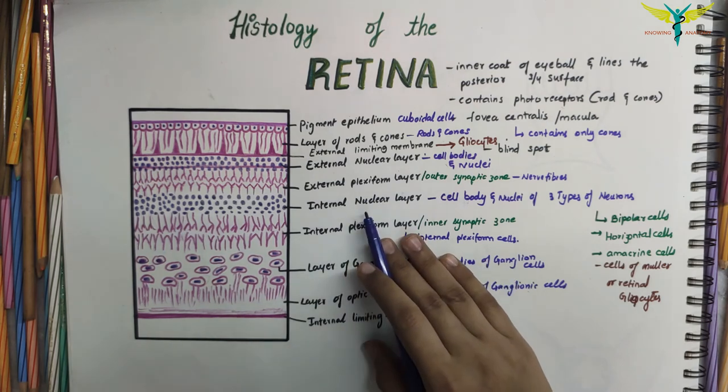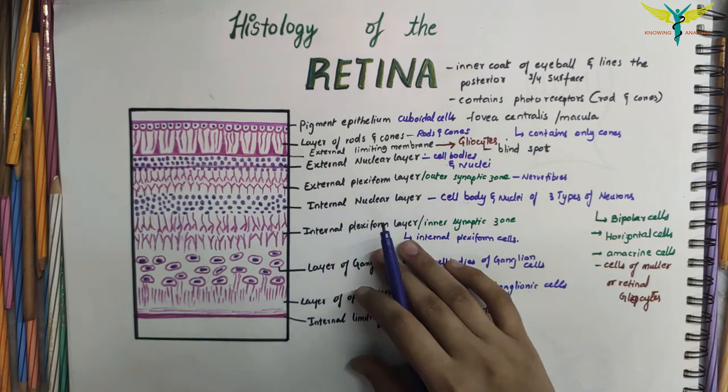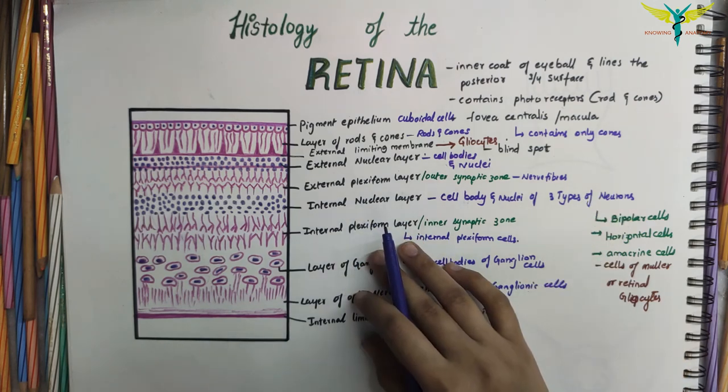That's all about the histology of the retina. If you want to know about the histology of the cornea and conjunctiva, you can click on the i-button. If you like this video, please subscribe to the channel and check out some of the other videos and playlists.